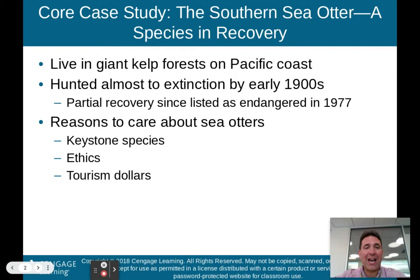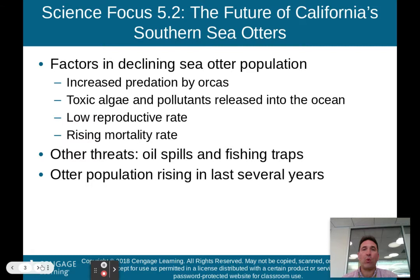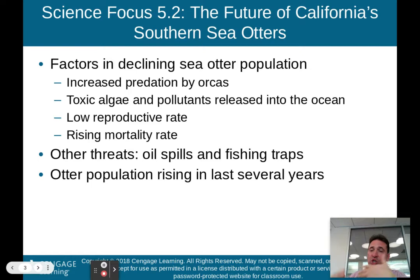Why do we care about sea otters? They are a keystone species to their environment, there are ethics involved, and tourism dollars as people like to see those sea otters. Science Focus 5.2 talks about the future of California's southern sea otters. Factors in declining their population include increased predation by orcas, toxic algae and pollutants released into the ocean by human activities, and a low reproductive rate, leading to rising mortality rates.